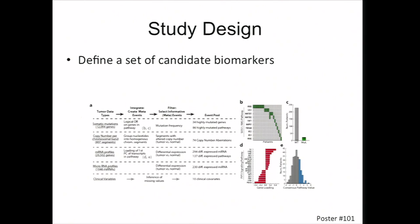So the study design: we started out with a top-down, unbiased screen, and we wanted to isolate the core candidate biomarkers in this dataset. This included frequently mutated genes, differentially expressed mRNA and microRNA, recurrently altered copy number events, as well as clinical variables.